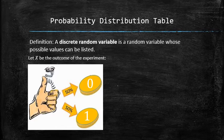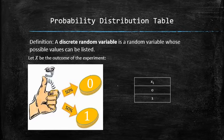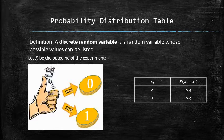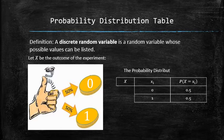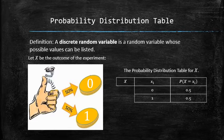By definition, we can list the outcomes and their probabilities side by side in the form of a table. The table that summarizes the possible values of a variable x and the corresponding probabilities is called the probability distribution table of x. Note that the sum of all probabilities must equal 1.